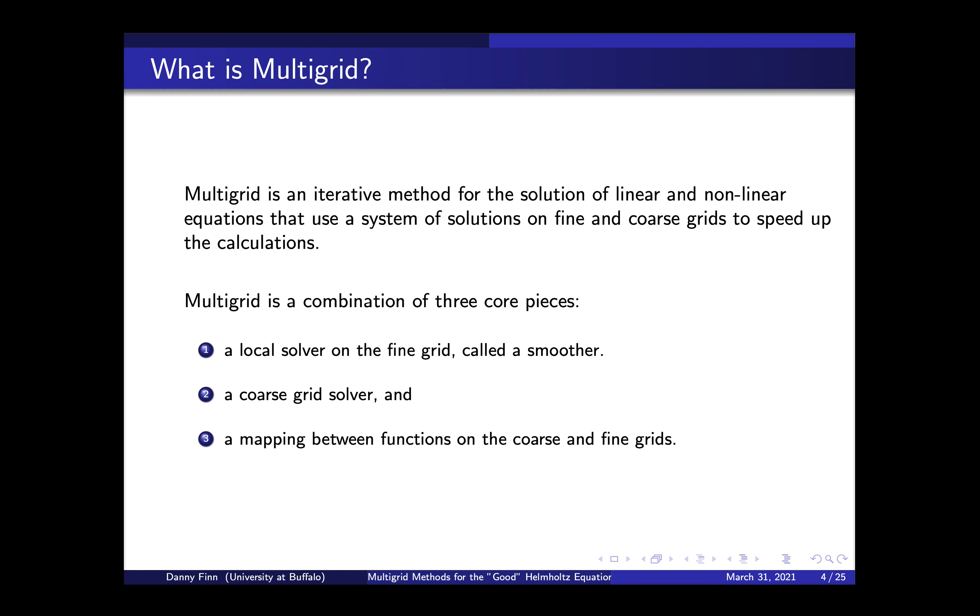And what if we don't have direct access to the matrix? What if the matrix A exists only as a subroutine that returns some vector A times V given some input V vector? So we don't even have access to A to do something like Gaussian elimination. So what do we do in these situations? Multigrid is a method developed in the 1960s and 70s. It's an iterative method for the solution of linear and nonlinear equations that uses solutions on the fine and the coarse grids to speed up calculations.